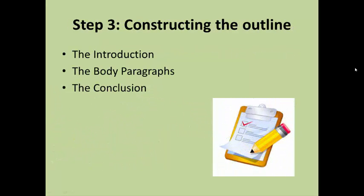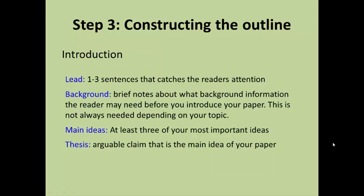An outline is broken up into three main parts: the introduction, the body paragraphs, and the conclusion. If you're going for a detailed outline, the first thing to include is the lead — the first one to three sentences of your paper that catches the reader's attention. Also include brief notes about what background information the reader may need. You should aim to have three main ideas that you will be discussing, and finally, include your thesis.